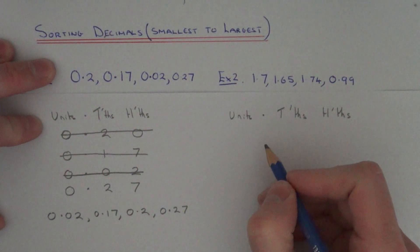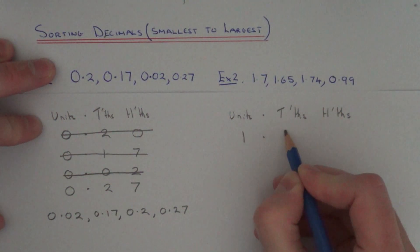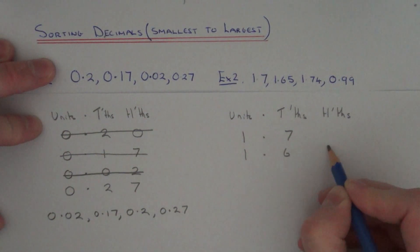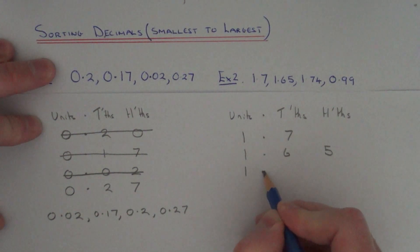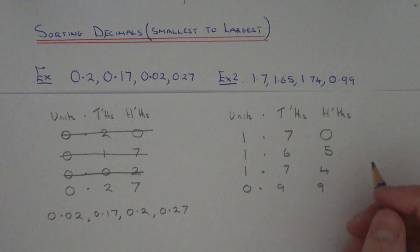So our first one is 1.7, so that's 1 unit 7 tenths. Our next one is 1.65, 1 unit 6 tenths 5 hundredths. Our next decimal is 1.74, and our final one is 0.99. Again you might want to fill in a zero on the first one, just to make things a little bit easier.